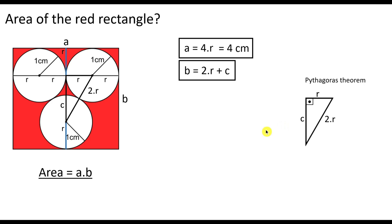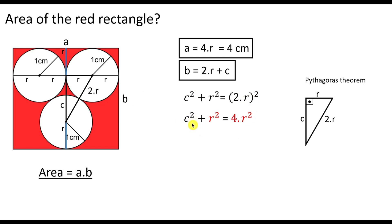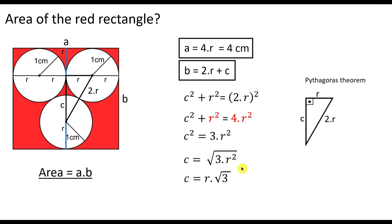The Pythagorean theorem tells us that the hypotenuse squared equals the sum of the squares of each side. So in our case, C squared plus R squared equals (2R) squared. Rearranging, C squared plus R squared equals 4R squared, so C squared equals 3R squared. Taking the square root, C equals R times the square root of three, which equals square root of three since the radius is one.